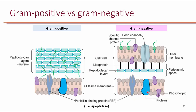Looking at the cell wall of gram-positive and gram-negative bacteria: the primary difference is the outer membrane that exists in gram-negative organisms. Gram-negative cell walls have the plasma membrane, a thin layer of peptidoglycan, and then the outer membrane. Gram-positive organisms have the plasma membrane followed by a thick layer of peptidoglycan and no outer membrane. Because aminoglycosides are polar, they cannot penetrate through the peptidoglycan layer. They need to use either porin channels or carrier proteins to get inside the cell.